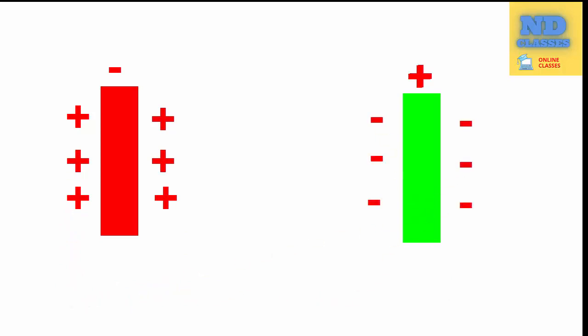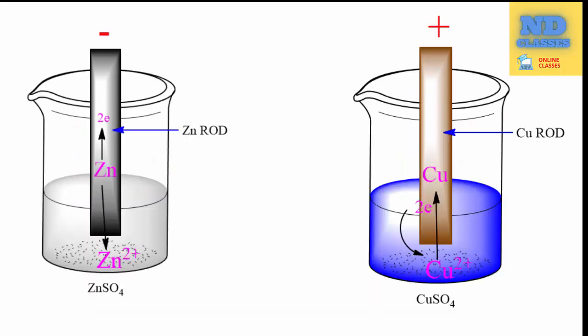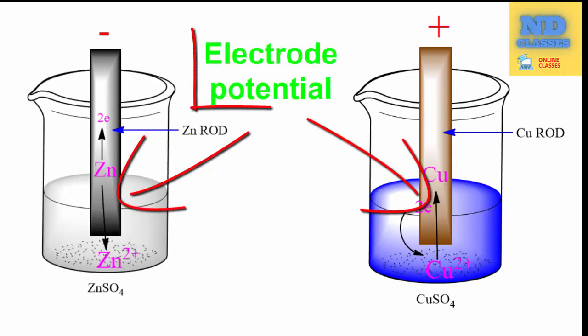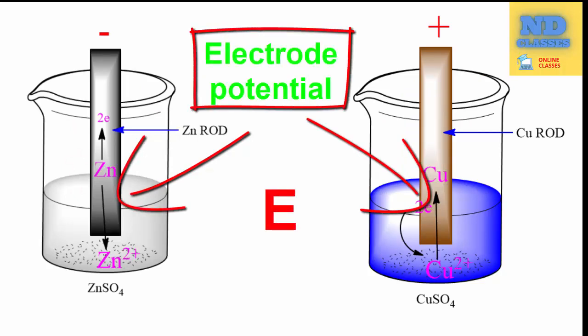As a result of this, an electrical double layer is created and the potential developed at the junction of rod and solution is called electrode potential, which is represented by symbol E.